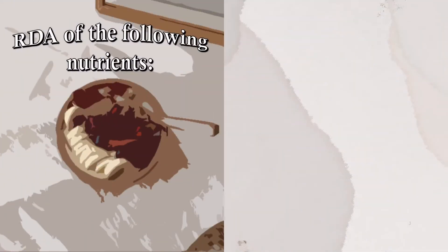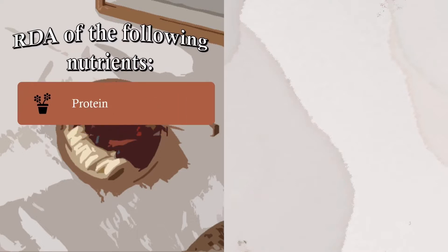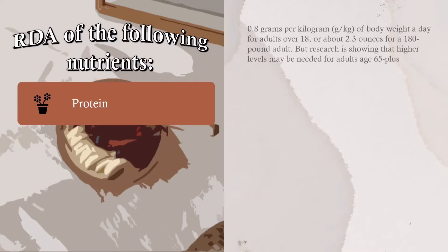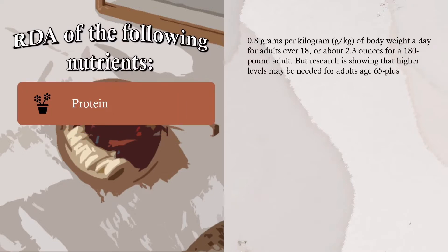RDA of the following nutrients. Protein: The RDA for protein is 0.8 grams per kilogram of body weight a day for adults over 18, or about 2.3 ounces for a 180-pound adult. Research is showing that higher levels may be needed for adults age 65 plus.